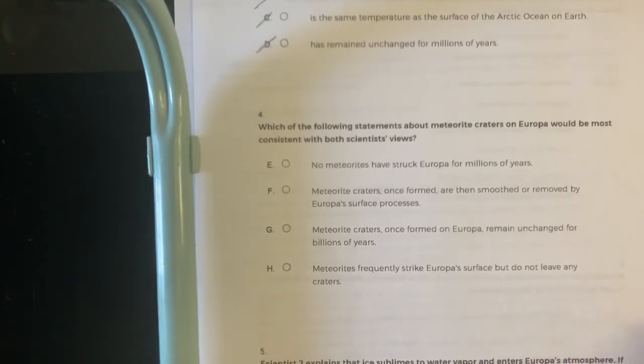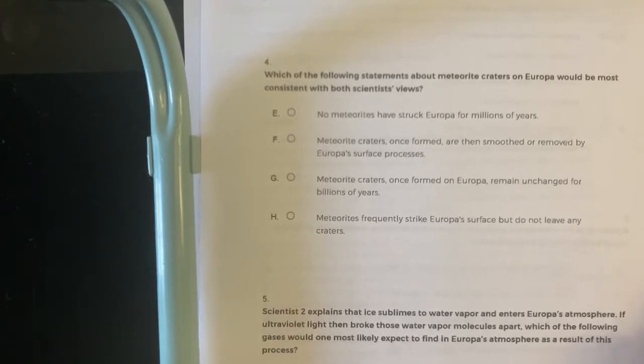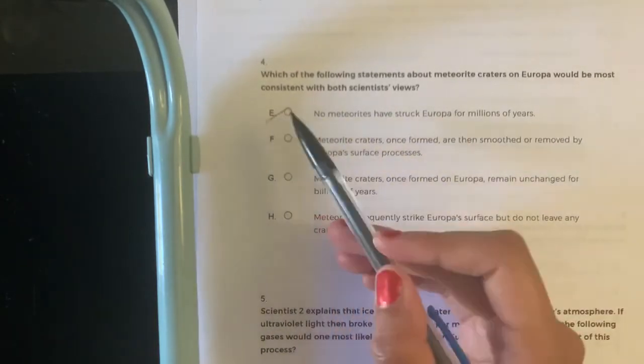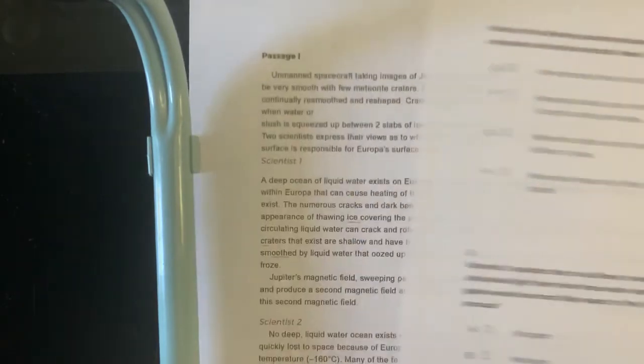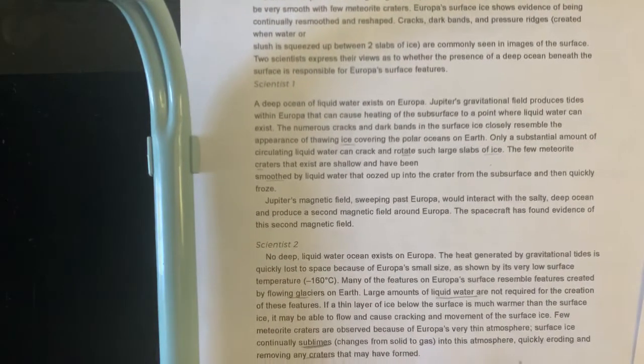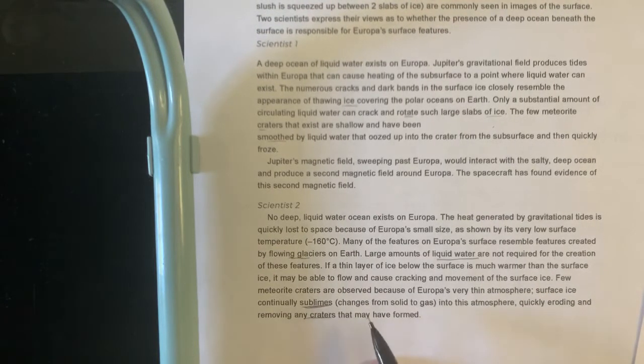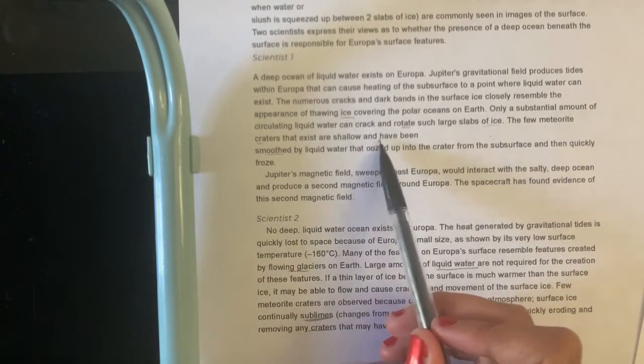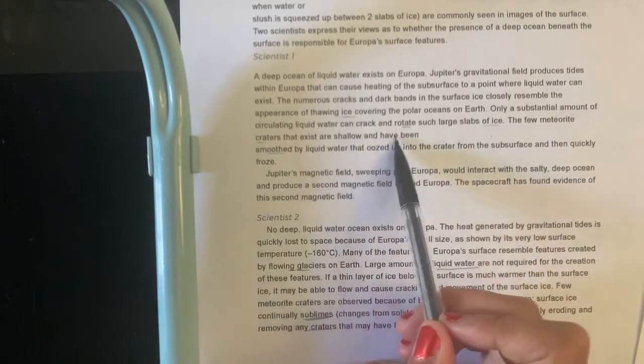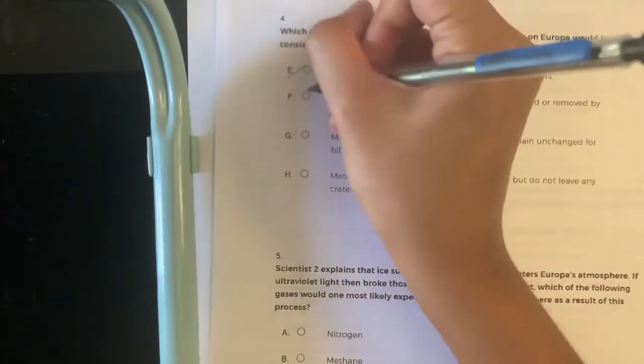Number four. Which of the following statements about the meteorite craters on Europa would be most consistent with both scientists' views? So no meteorites have struck? No. Meteorite craters once formed are then smoothed or removed. I think this is correct because, look, the surface ice sublimes quickly, eroding and removing any craters that may have formed. So the craters have formed. And it says right here the few meteorite craters that exist are shallow and have been smoothed. So they do exist, they've just been smoothed or removed by surface processes.